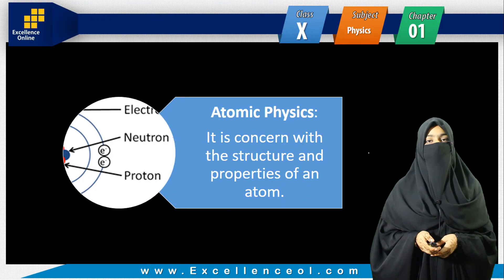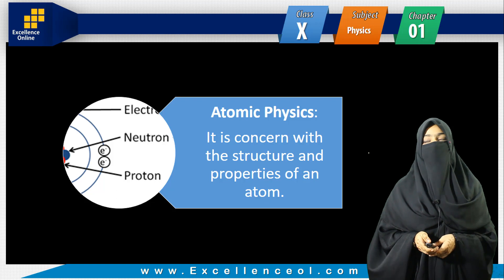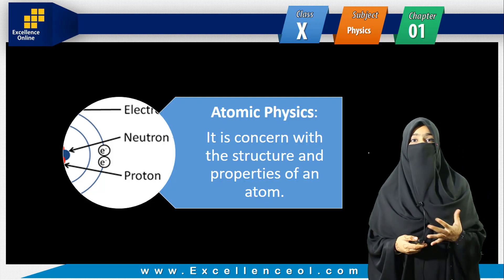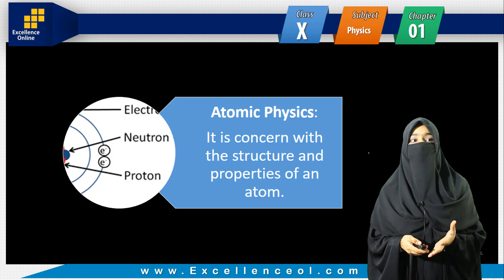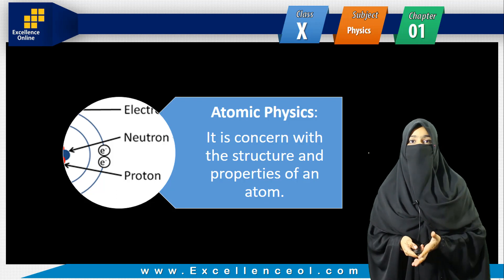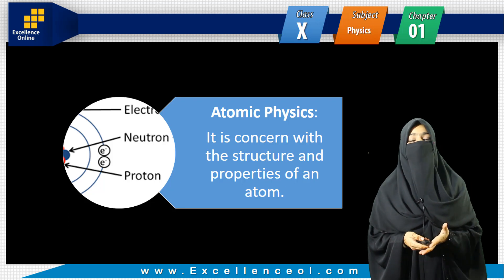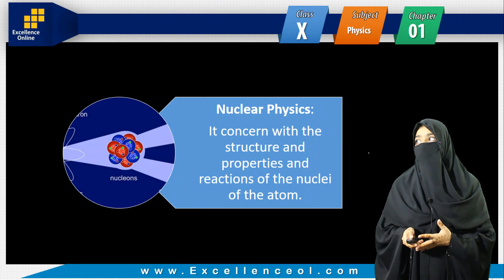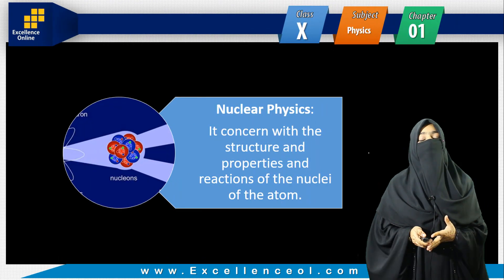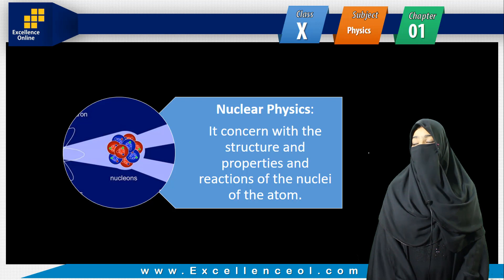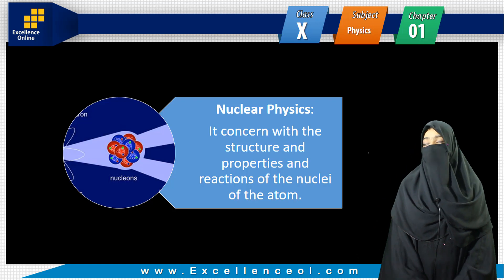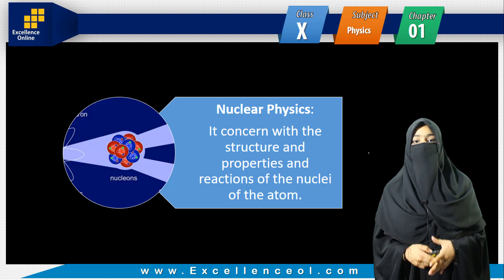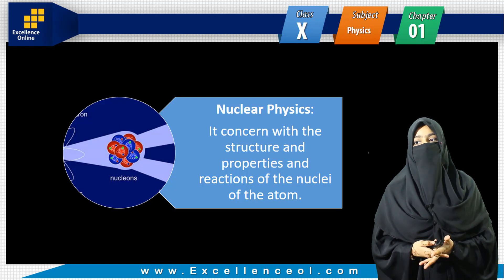Number five, atomic physics. It is concerned with the structure and properties of an atom. Number six, nuclear physics — it is concerned with the structure and properties of the nuclei of the atom, and what events in the nucleus are happening.